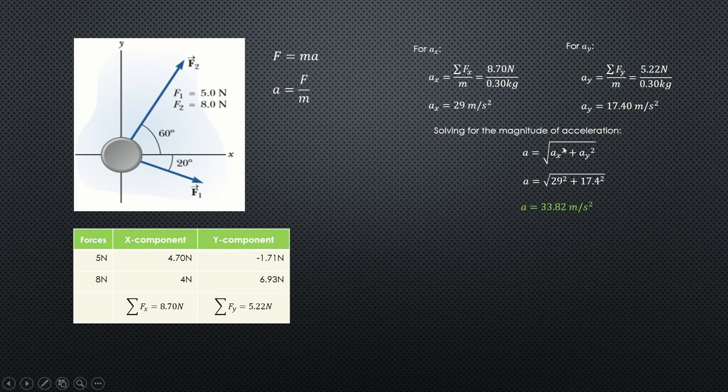This gives you 29 squared plus 17.4 squared. Simplifying that gives you a magnitude of 33.82 meters per second squared. So this is the magnitude of the acceleration.